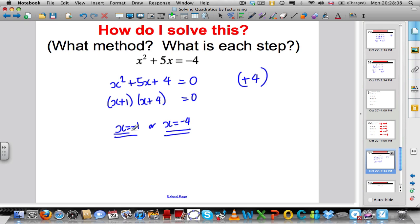Substitute them in to the top and check they work. Let's just do it. Let's put minus 1 in. Minus 1 squared is 1. 5 times minus 1 is minus 5. 1 minus 5 is minus 4. And I've got an answer.